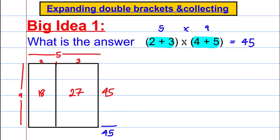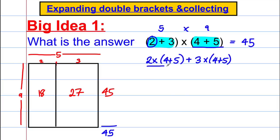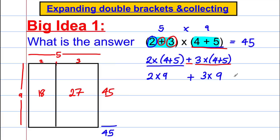What I want us to realise is that this multiplication can be written as: 2 multiplied by the bracket (4 add 5), then add 3 multiplied by the bracket (4 add 5). That gives 2 times 9 add 3 times 9, which is 18 add 27, equalling 45. That's the idea I'm going to use with algebra.